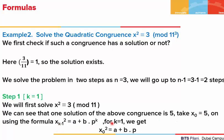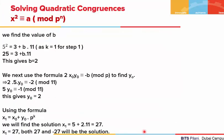Using the first formula for k = 1, we get x₀² = a + b·p, which gives us b = 2. From the second formula for k = 1, 2·x₀·y₀ ≡ −b mod p. Substituting the known values, y₀ comes out to be 2. Using the third formula with k = 1, x₁ = x₀ + y₀·p¹. Substituting x₀ = 5, y₀ = 2, and p = 11, we get x₁ = 27. So both 27 and −27 are solutions at this stage.